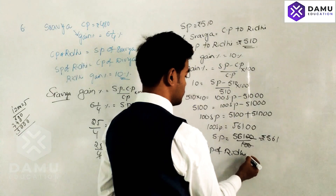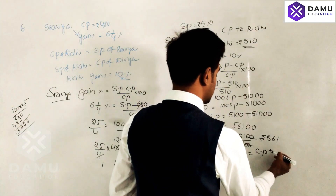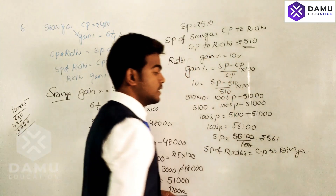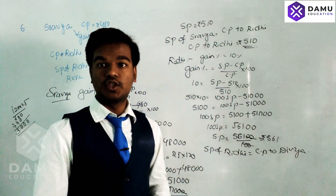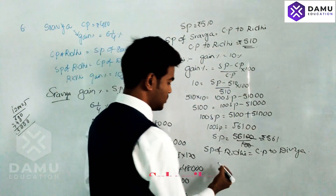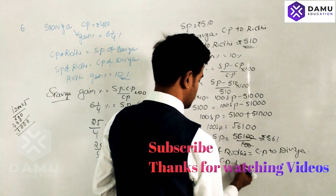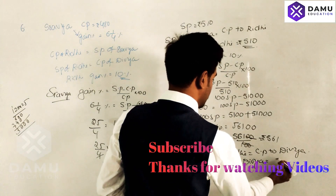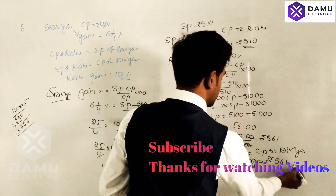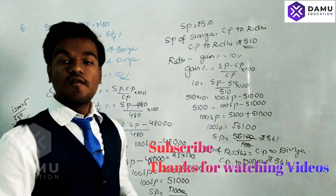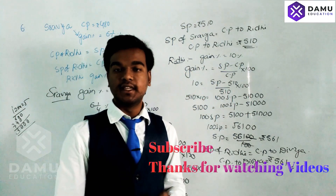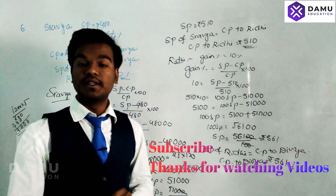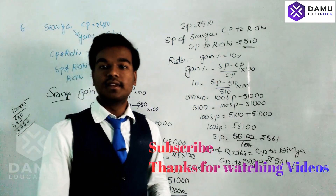So the selling price of Riti to Divya equals the cost price to Divya. The cost price to Divya is 561 rupees. So Divya needs to pay 561 rupees to Riti, and Riti needs to pay 510 rupees to Shravia. This is a chain transaction problem solved step by step.